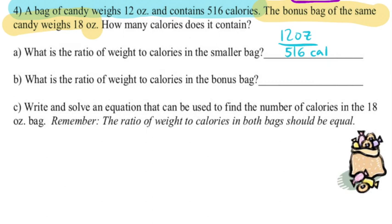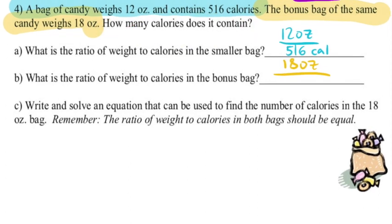Now they ask us for the same information about the bonus bag. In the bonus bag, we have 18 ounces. I want to keep ounces on top since I did that the first time. So 18 ounces over the number of calories, which we don't know. That's the whole question. How many calories? We don't know. Let's call that C.